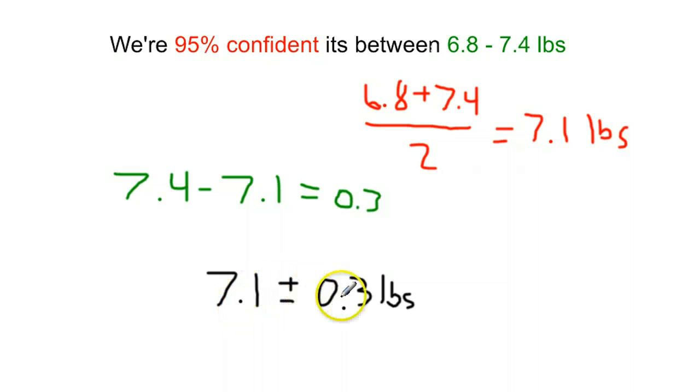If we do the math, 7.1 plus 0.3 is 7.4, 7.1 minus 0.3 is 6.8, so we know we did it right. And we could use this in a sentence saying something like, we're 95% confident that the average weight of the golden doodle puppies is 7.1 plus or minus 0.3, or within 0.3 of 7.1 pounds. And we'll go over how to construct those sentences in a moment.